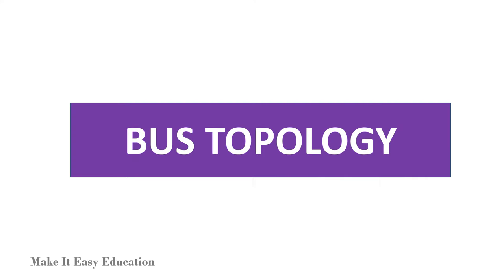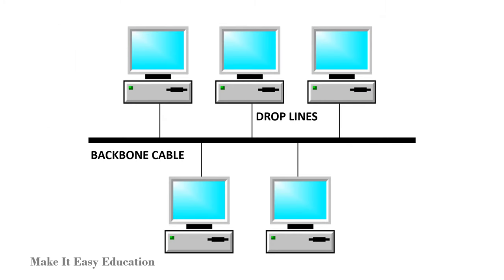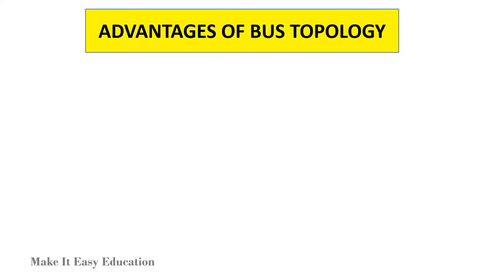Bus topology. In bus topology, there is a backbone cable and all the devices are connected to this backbone cable through drop lines. Since all the data is transmitted over the main cable, there is a limit on the number of drop lines and the distance the main cable can have.